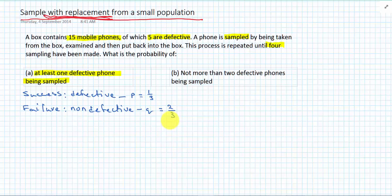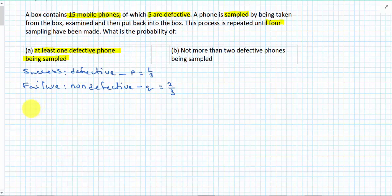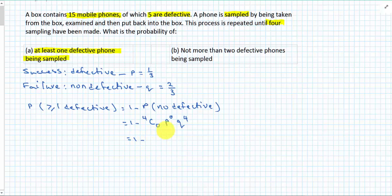At least one defective means one defective or two defective or three or four. So I could go and find those four or I could do one minus probability of greater than or equal to one defective. It's the same as one minus probability of no defective. So from four choose, I want no defective. One minus one times one times two-thirds to the power of four.